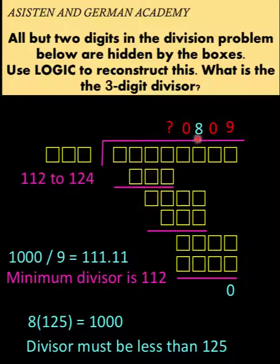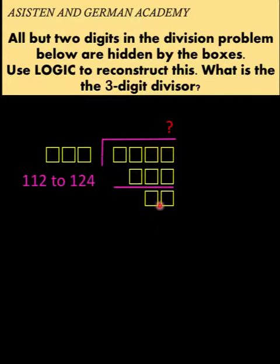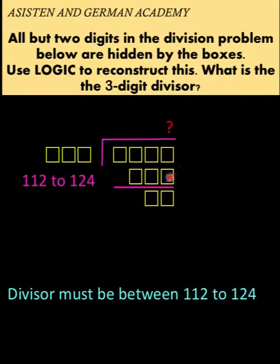Just like that, and we already have these four digits of this five-digit quotient. So let's find now the value of this question mark. Let's focus on this part. This number times a three-digit number is equal to this three-digit product. Since our divisor must be between 112 to 124, then let's check the upper limit.